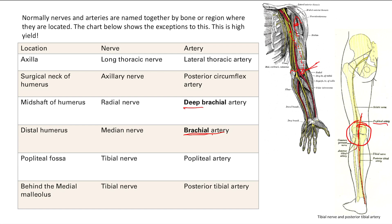This tibial nerve is going to track all the way down; it actually tracks with the posterior tibial artery. It goes behind the medial malleolus — this little bump right here. So it goes posterior to the medial malleolus. That's it for our nerve and artery pairings that don't go by name.